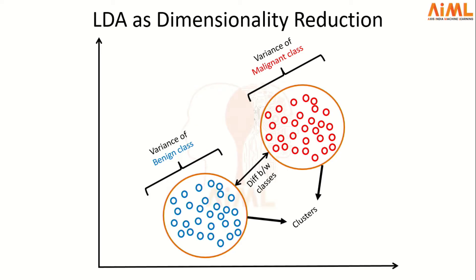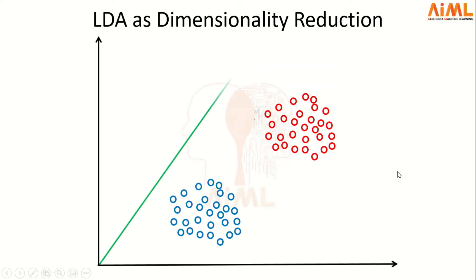LDA focuses on finding the unit vector of the decision boundary such that two criteria should be satisfied. First, the variance of the projected data points should be reduced. Second, the distance between the projected data of the individual clusters should increase.